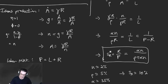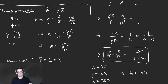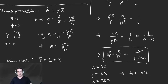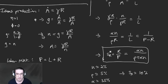Another way to think about it: if you want a constant growth rate, then R — your number of researchers, proportional to population — should be growing at the same rate as technology A. So G_A = G_P = N. The growth rate of technology equals the growth rate of the population. We argued that this follows from our assumption of phi=0 and eta=1 in the ideas production function.